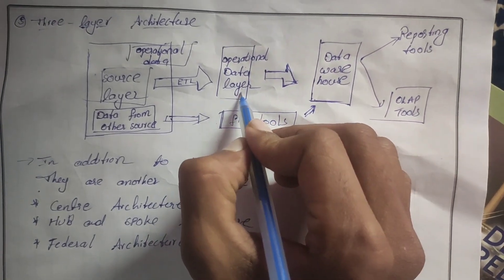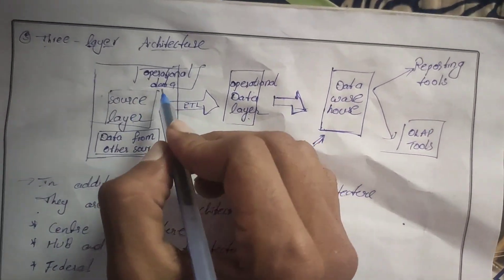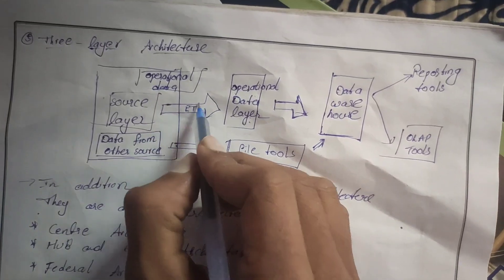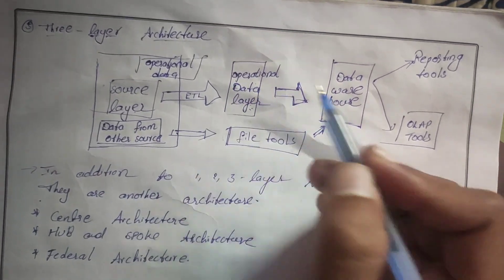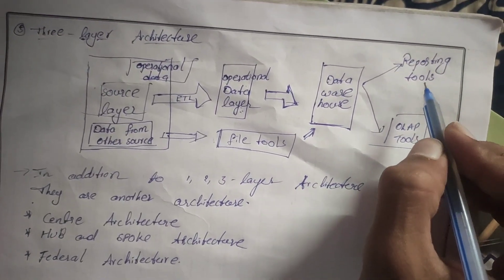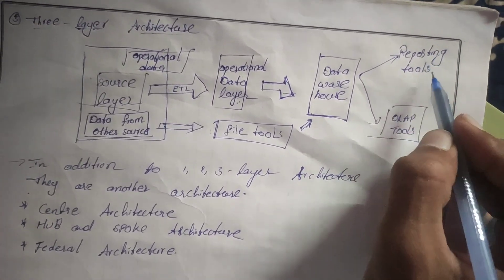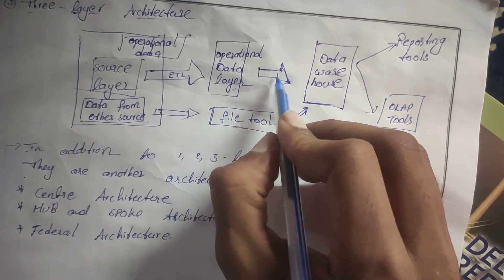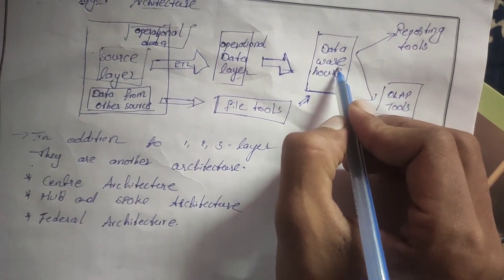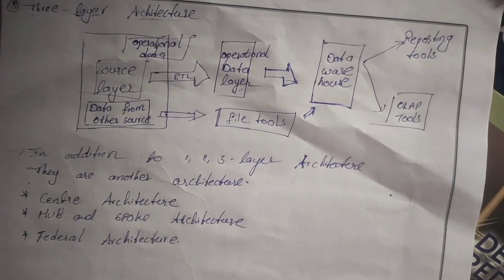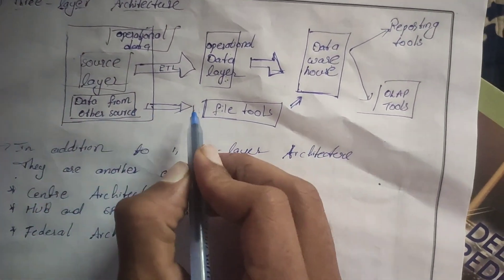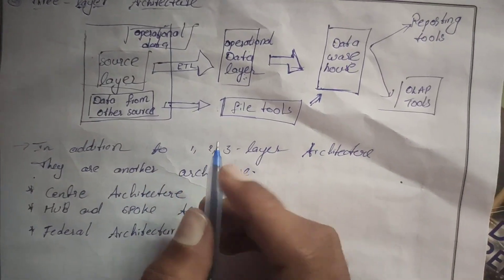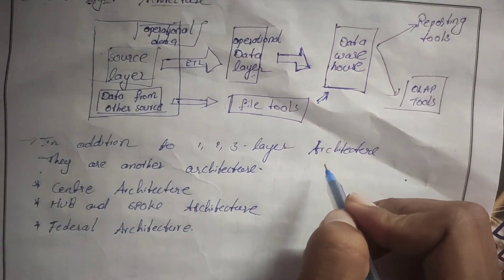Three layer architecture has an additional operational data layer. Data is extracted from the source, and by using an ETL tool it is stored in the operational data layer. When we want to access data using reporting tools and OLAP tools, the operational data layer transforms it into the data warehouse, and then it will be accessed. Or we can access data directly from the data warehouse using file tools.